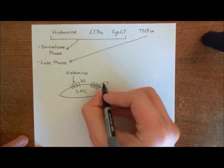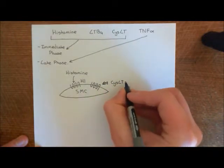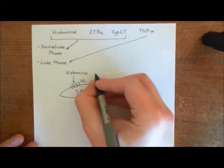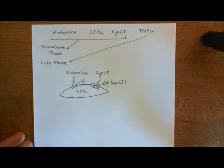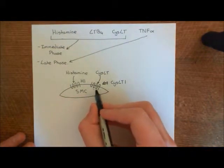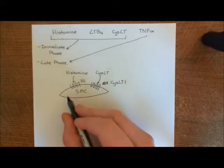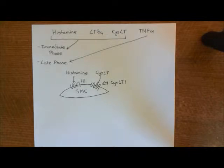The cystinyl leukotriene receptor — specifically the cystinyl leukotriene receptor type 1 — is believed to be very important in the pathology of asthma. Leukotriene C4, leukotriene D4, and leukotriene E4 will all work by binding to the cystinyl leukotriene receptor and activating the GQ cascade, which will then lead to contraction of the smooth muscle cell. If this is happening in all of the smooth muscle cells surrounding the bronchi, that's going to cause constriction of all of the bronchi and all of the airways.